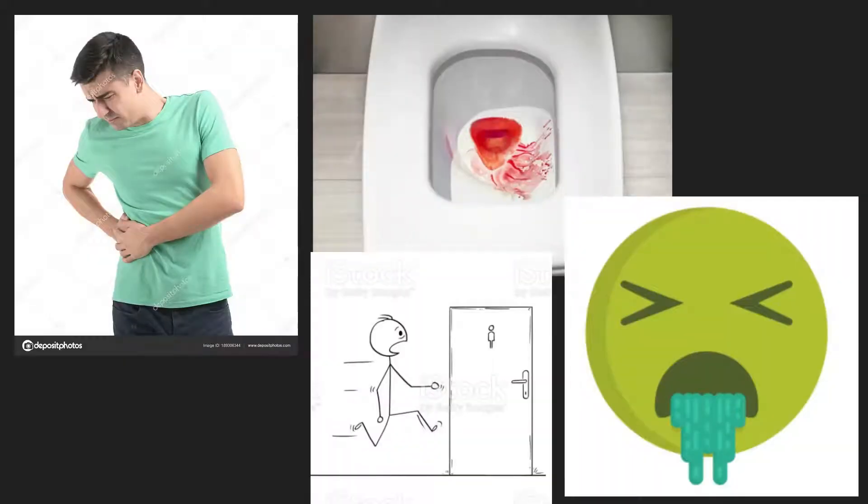We have pain in the flank, needing to pee frequently, blood in the urine, as well as nausea and vomiting.